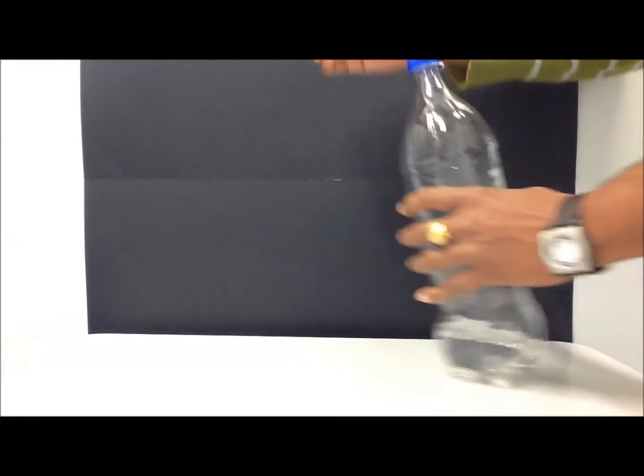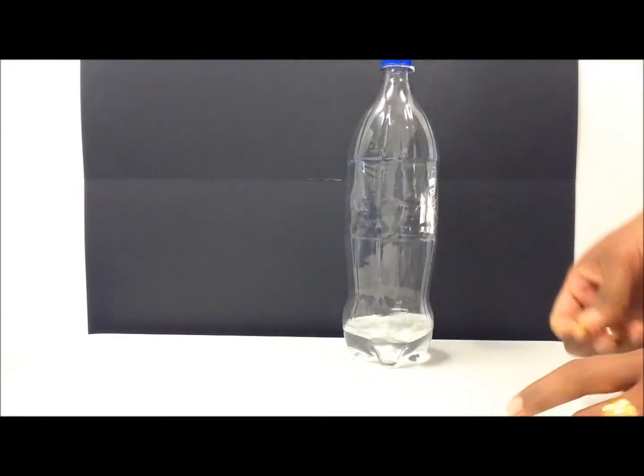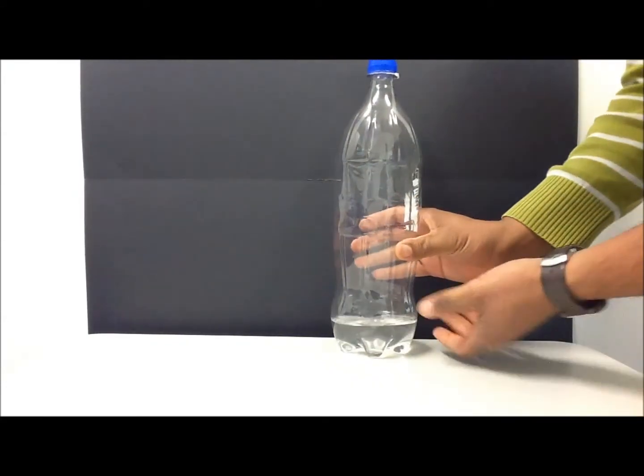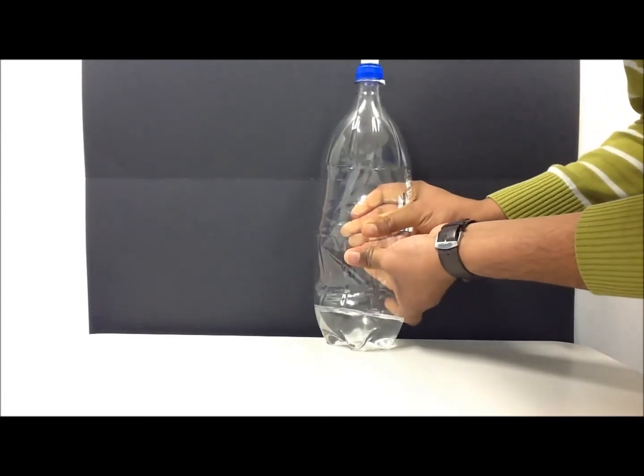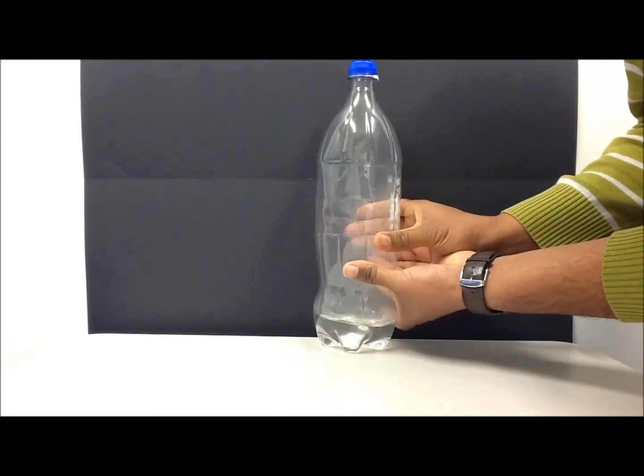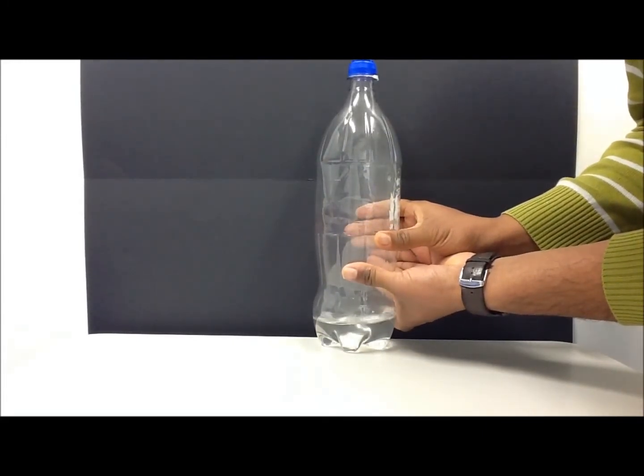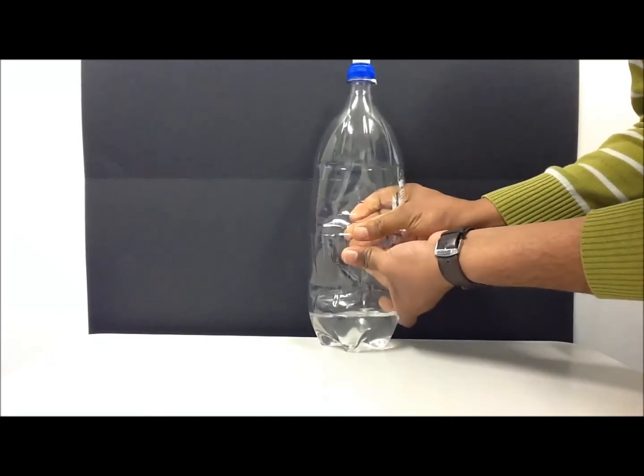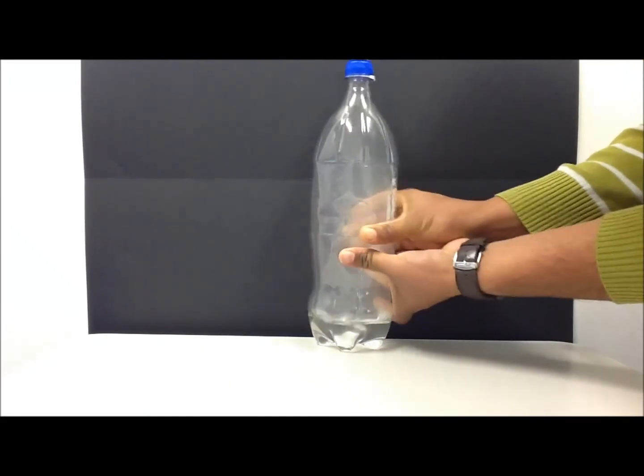This time when I release the bottle, the little fluctuations in temperature are sufficient to cause cloud formation. As you can see, when I squeeze the bottle again the condensate disappears. When I release the bottle, you can see the clouds forming again.